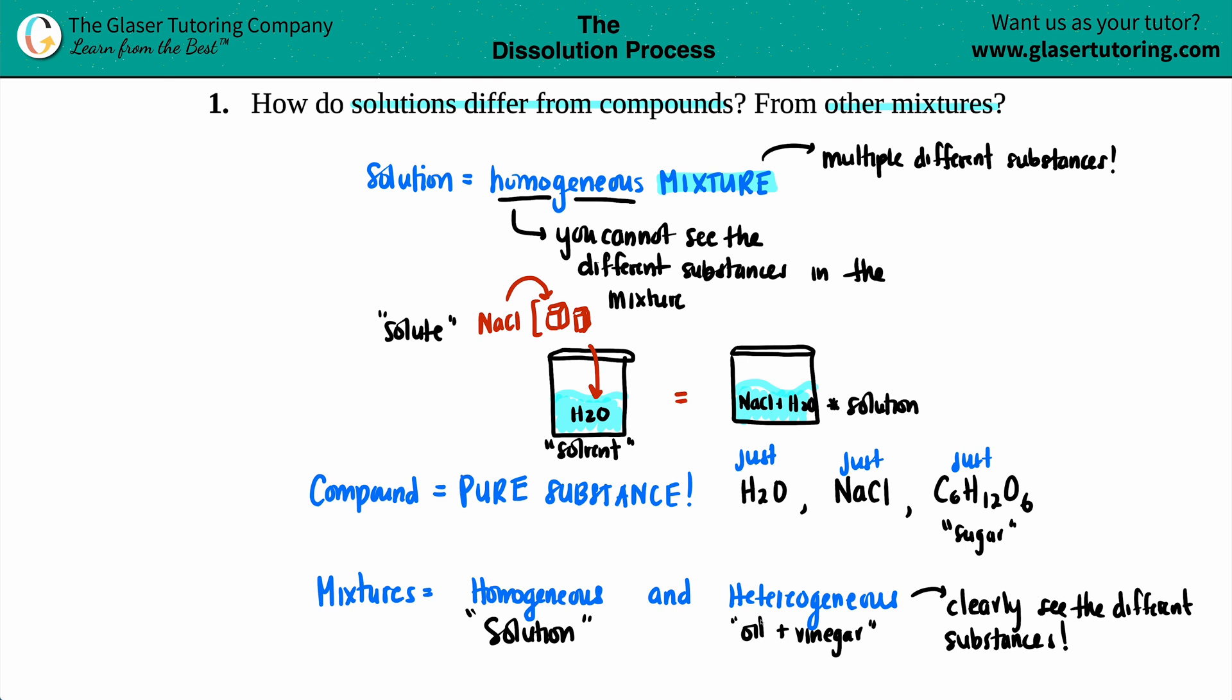That's the difference here. A solution is specifically a homogeneous mixture, versus there's other mixtures that can be heterogeneous and those are clearly not solutions because you can see the difference.